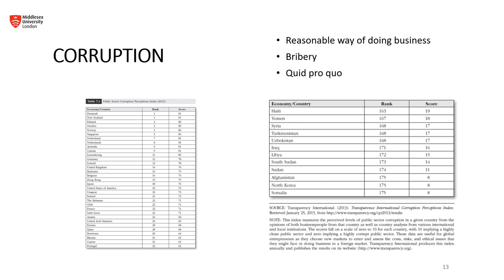Corruption can distort markets, reduce the quality of products and services, increase costs, and result in unfair advantages. It also carries significant legal and reputational risks. Companies may face severe penalties under laws like the Foreign Corrupt Practices Act (FCPA) in the United States or the UK Bribery Act, which have extraterritorial reach — meaning they can prosecute corrupt practices committed abroad by nationals or companies based in those countries. To combat corruption, many companies implement rigorous compliance programs, conduct regular training for employees, and establish clear policies and procedures for ethical behavior, creating a culture of integrity, transparency, and accountability.